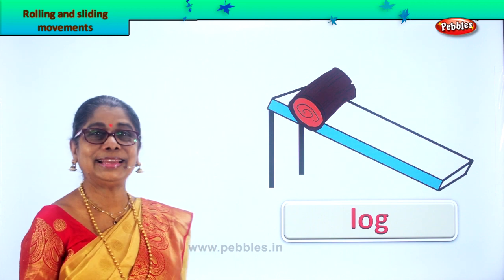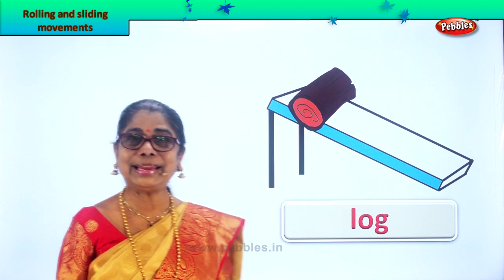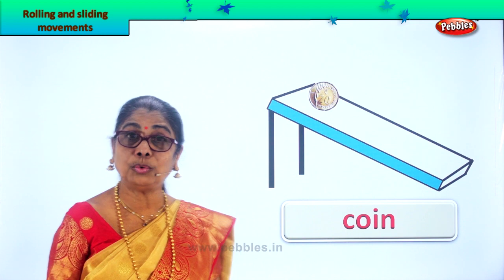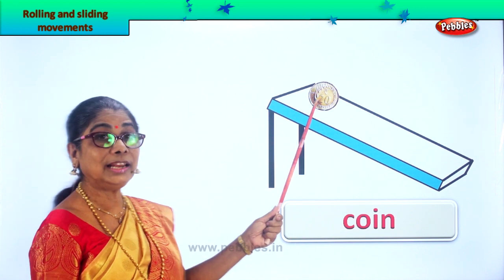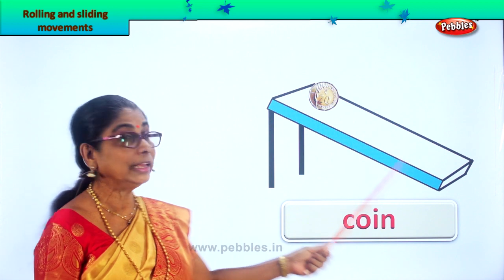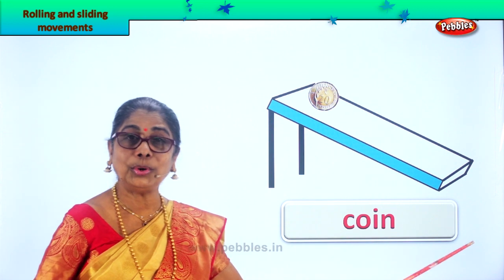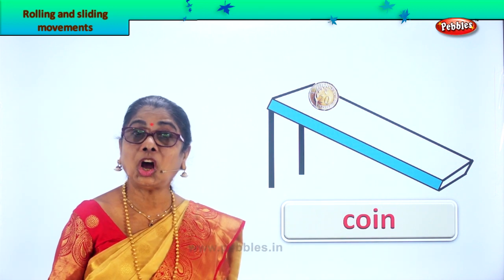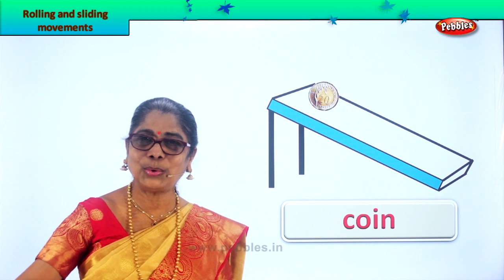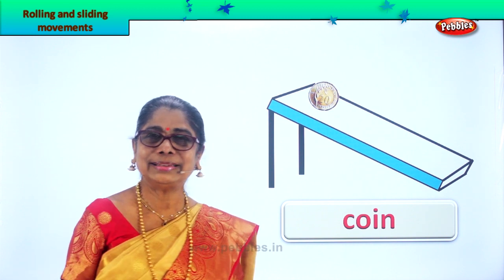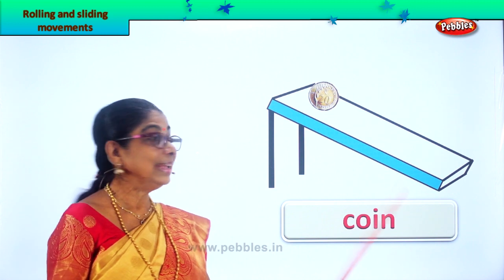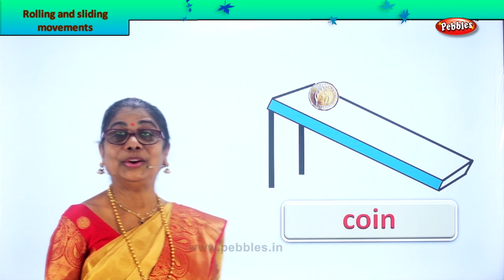Rolling. Things that roll. Let's look at another — what else can roll down? What is it? A coin. If you put a coin there, it will just roll down. A coin. You like to roll the coin down on a slanting place.